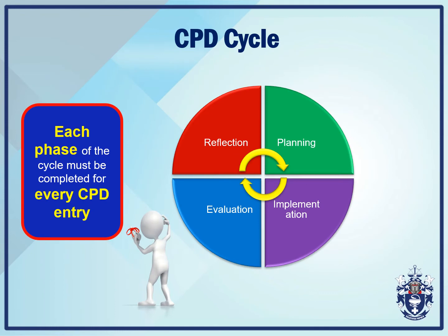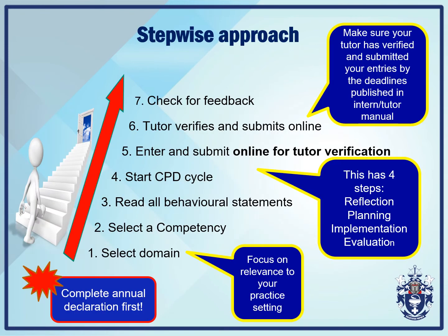That is your four-step process in the CPD cycle. It is a cyclical process and must be fulfilled for every single competency or domain. Before you begin the entire CPD cycle as an intern, you must complete your annual declaration first — if you don't complete it, you cannot move forward. The first step is to select a domain, focusing on relevance to your particular practice setting, whether community pharmacy or hospital pharmacy.